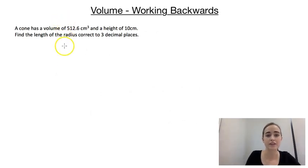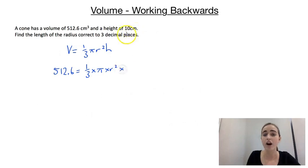So if we start off by writing down the formula, we're going to have V = 1/3 times π times the radius squared times the height. And then we can go through and fill in everything that we know. So we've got 512.6 for the volume. That's going to be 1/3 times π times r² times the height, which was 10.